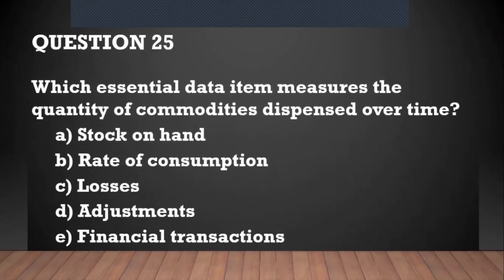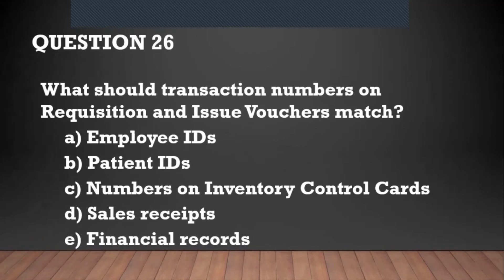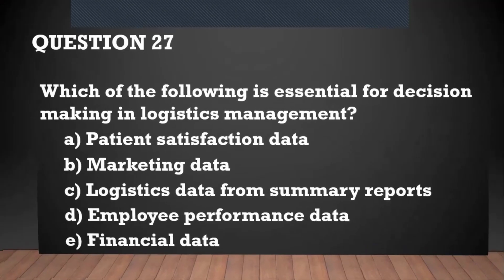Question number twenty-five: which essential data item measures the quantity of commodities dispensed over time? Your answer is rate of consumption. Question number twenty-six: what should transaction numbers on requisition and issue vouchers match? They should match the numbers on your inventory control card.